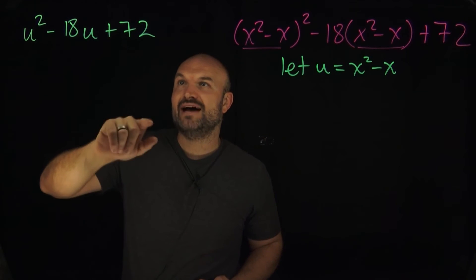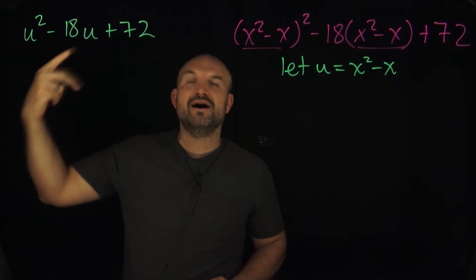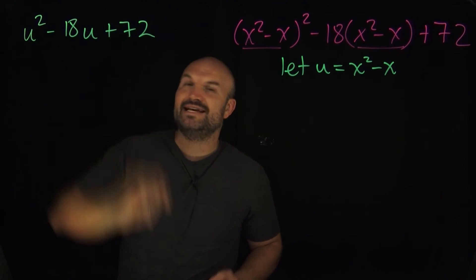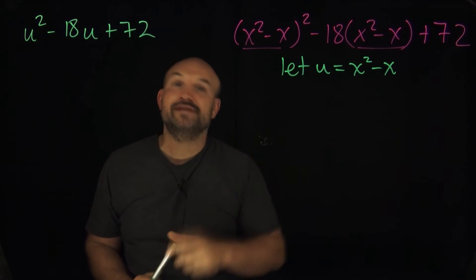Yeah, 12 times 6 is 72. So since they both need to multiply to give me positive 72 and add to give me negative 18, that's gonna be u-6 and u-12.